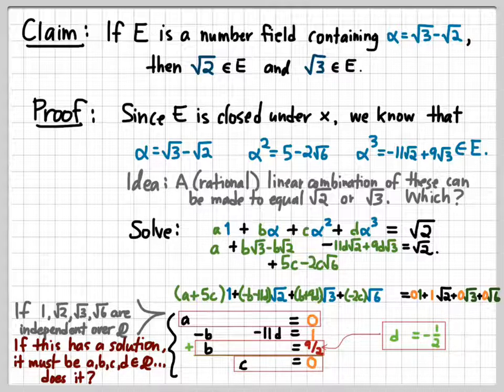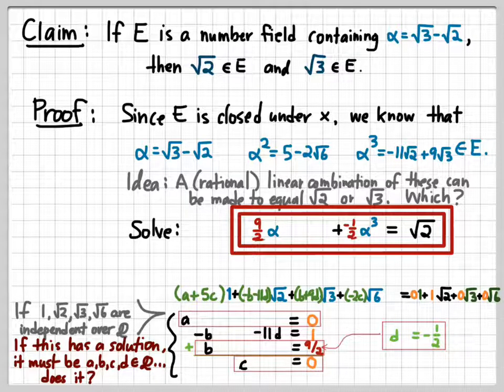So in fact, there we have a solution to this system of equations, all of whose coefficients now are rational numbers. Plugging that back into our original statement, we find out that 0 times 1 plus 9/2 times α plus 0 times α² plus -1/2 times α³ equals √2. Simplifying that out, we find that we can write the number √2 as 9/2 α - 1/2 α³. And since both α and α³ belong to E, and because E is a field that's therefore closed under addition as well, that means that the square root of 2, because we can write it in this fashion, must also belong to E.